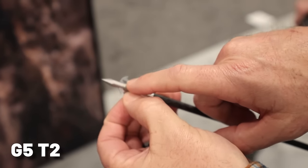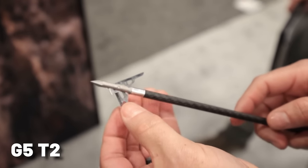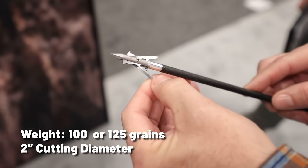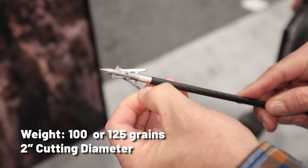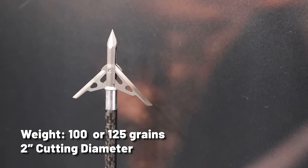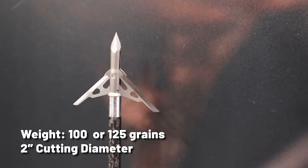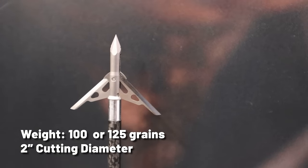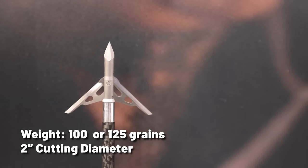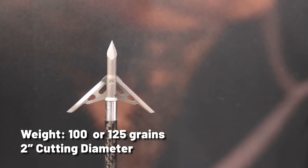G5 T2. G5 has jumped into the two-blade rear-deploying mechanical broadhead game with the new T2 broadhead. Made from 100% stainless steel, the T2 uses G5's slip-lock retention system to hold the blades closed in flight, and then expands to a full 2-inch cut on impact. The blades are 32 thousandths thick, and the T2 is available in both 100 and 125 grain options, pricing not available at this time.